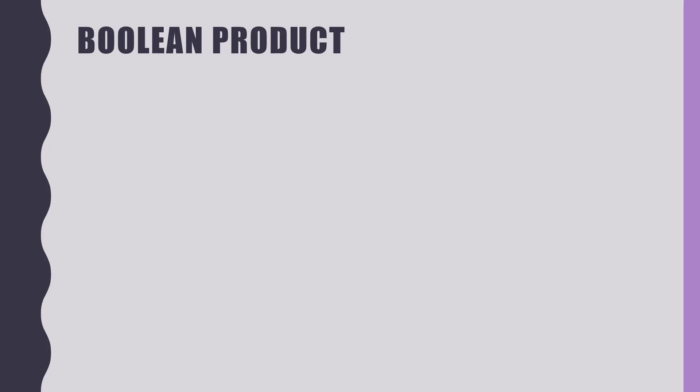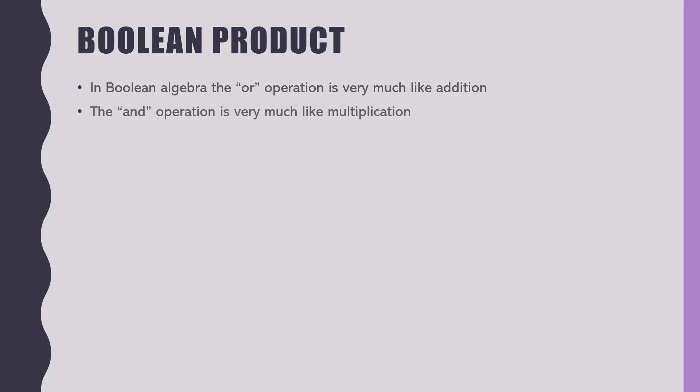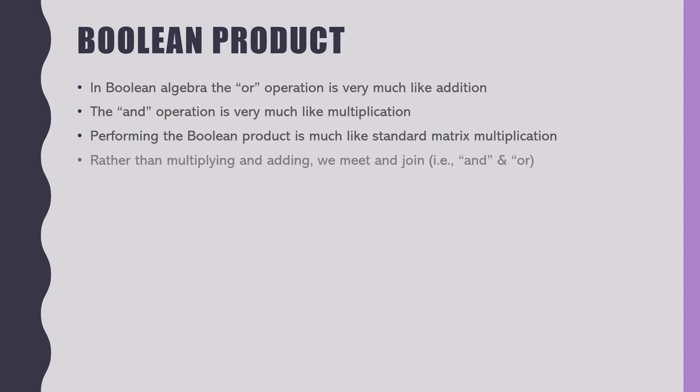Let's look at the boolean product. This is the main reason we want to talk about a meet and a join, because it's kind of a combination of the two. In boolean algebra, the OR operation is kind of like addition, and the AND operation is very much like multiplication.